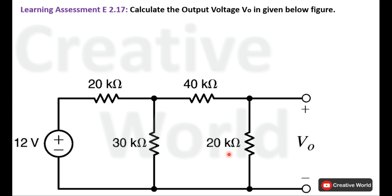The voltage across the 20 kilo ohm resistance is required. We know that voltage across any resistive element is the product of current through it and its resistance value. We have the resistance value, but the current through this resistance is not given, so first we must calculate it.